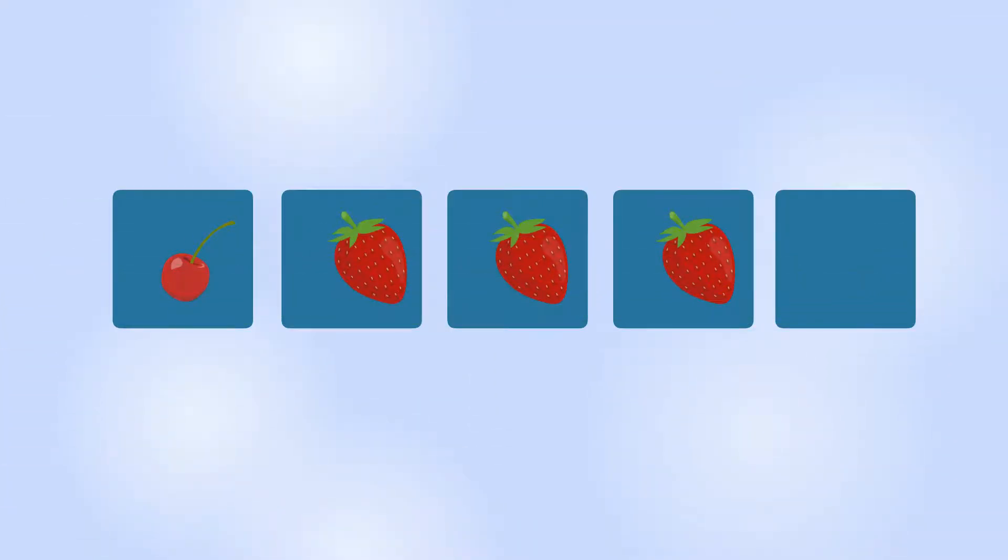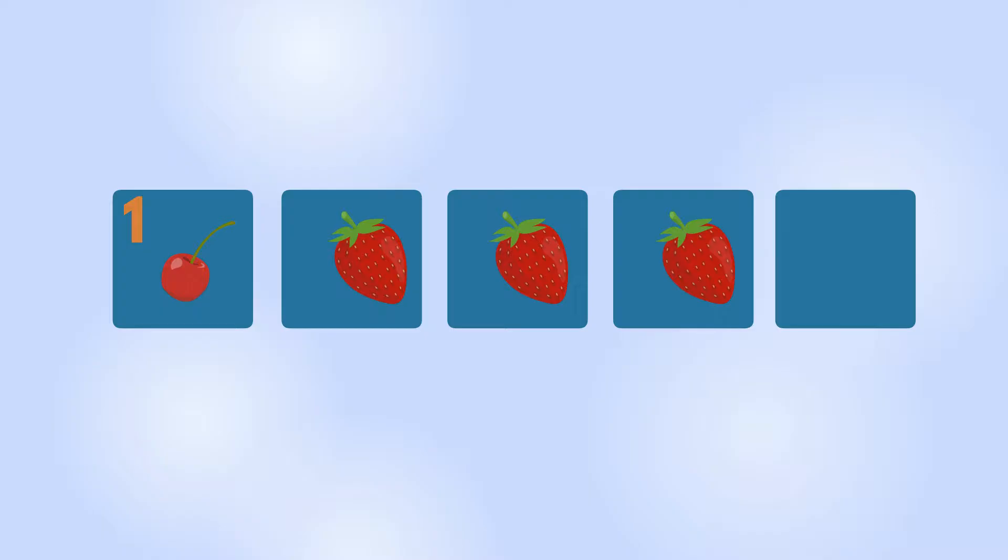Let's start! How many fruits are there? Cherry. One. One cherry.